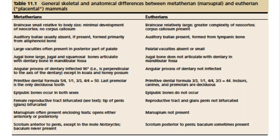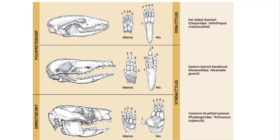Looking at general skeletal and anatomical differences between metatherians and eutherians: one of the important points was the presence of the epipubic bones, which are involved in ventilation of the lungs. The other important point was that the scrotum is anterior to the penis in marsupials and posterior in placental mammals. We talked about how kangaroos manage to copulate — remember the story about the St. Louis zoo.